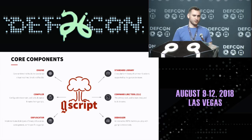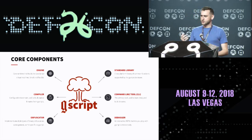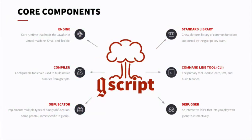G script is a framework that allows you to rapidly implement custom droppers for all three major operating systems. What makes up G script? First, there's the engine — the thing inside that native binary that actually runs and executes the logic specified in your script. There's the compiler, which takes your script and turns it into a native binary. There's an obfuscator hooked into the compiler to make it harder for blue team folks. We've got a standard library with functions you can use inside your Genesis scripts, a command-line tool, and an interactive debugger to help you develop scripts reliably and test them ahead of time.